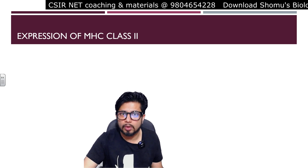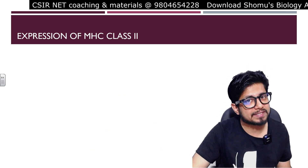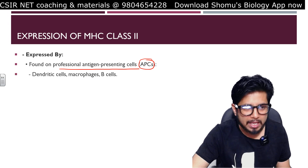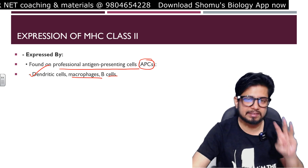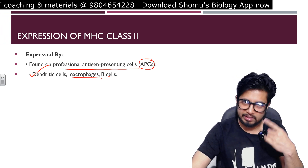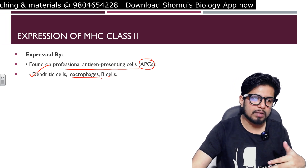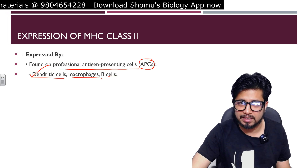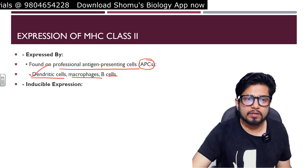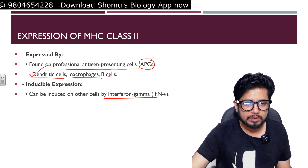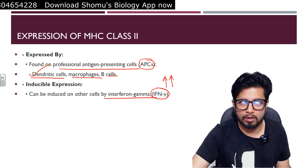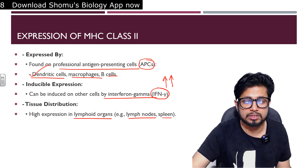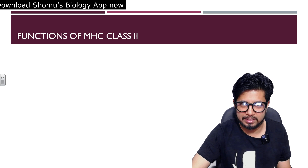Now, the expression of MHC class 2 molecules — not all cells express MHC class 2. It is expressed by professional antigen presenting cells known as APCs, for example dendritic cells, macrophages, and B cells. Dendritic cells express both class 1 as well as class 2 MHC molecules. The expression of MHC class 2 is induced by interferon gamma, and its release causes increased expression of MHC class 2 on the surface of APCs. It is highly expressed in lymphoid organs such as lymph nodes and spleen.